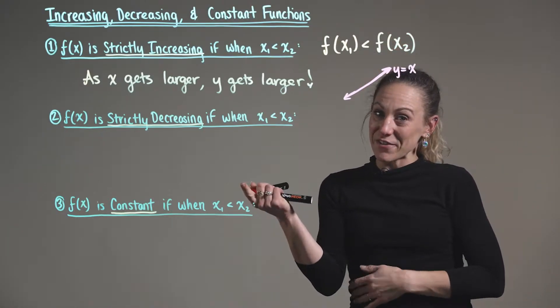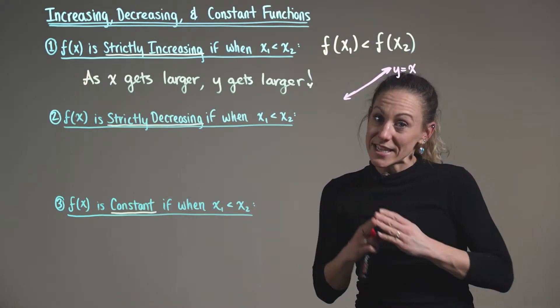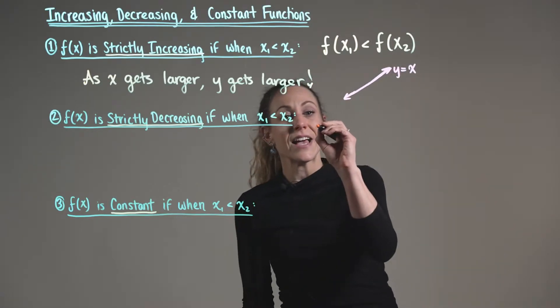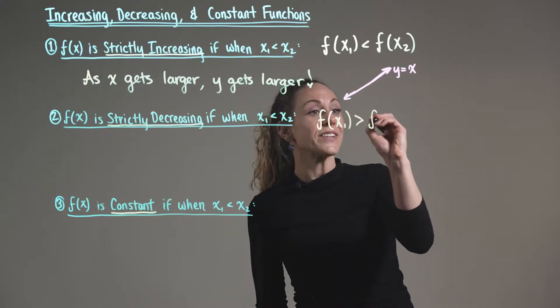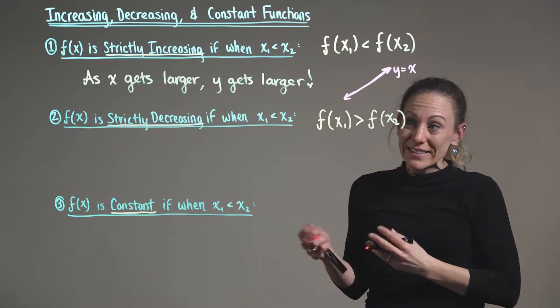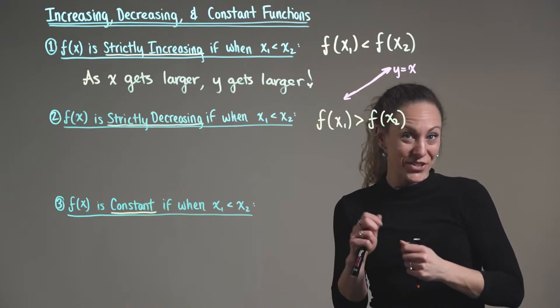Now our second definition, we say that a function f of x is strictly decreasing if when x sub one is less than x sub two, then f of x sub one is greater than f of x sub two. Now again, this is very formal, so let's break this down into easier to understand terms.